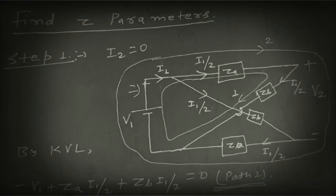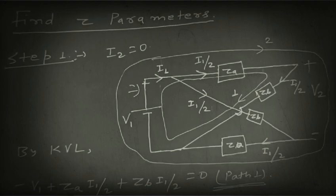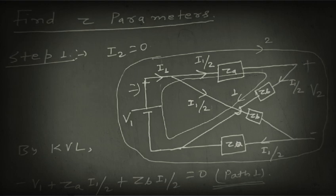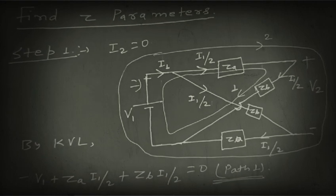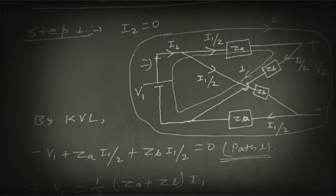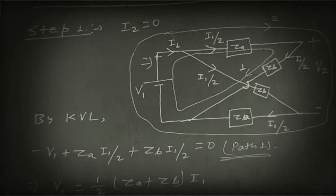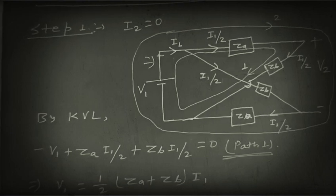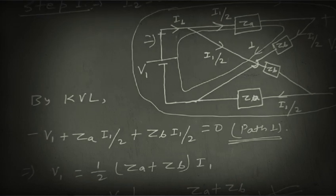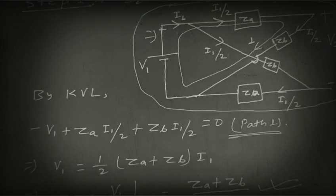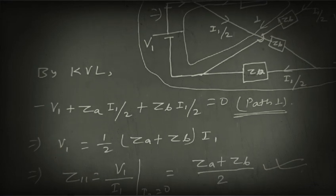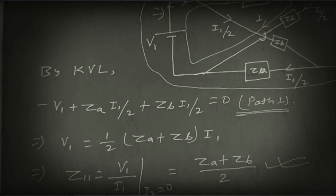Taking path one — voltage source V1, upper impedance ZA, and diagonal impedance ZB — and applying Kirchhoff's voltage law, we get: minus V1 plus ZA·(I1/2) plus ZB·(I1/2) equals zero. From here, V1 equals (1/2)·(ZA + ZB)·I1. Therefore V1/I1 equals (ZA + ZB)/2. This is the value of Z11.